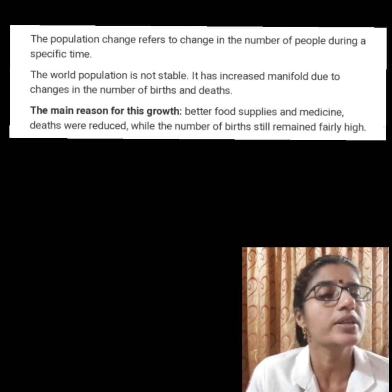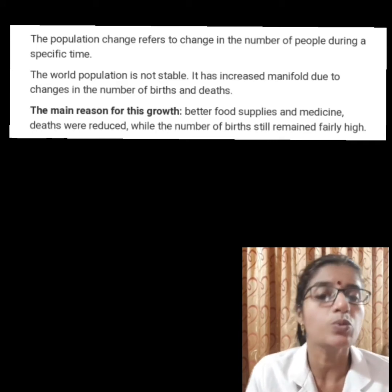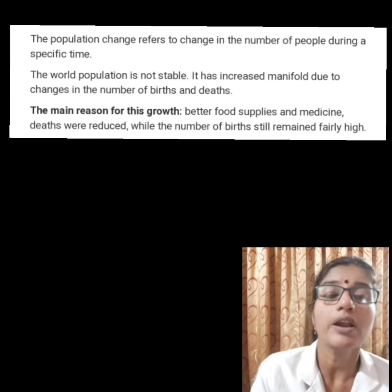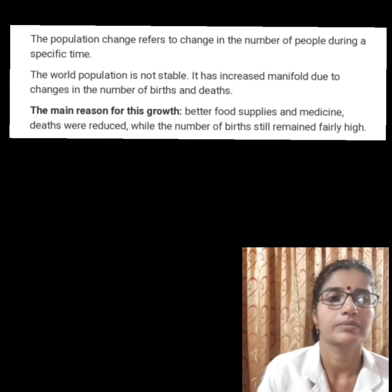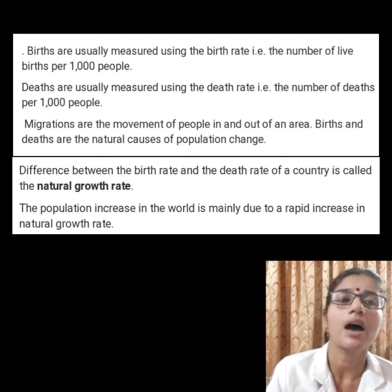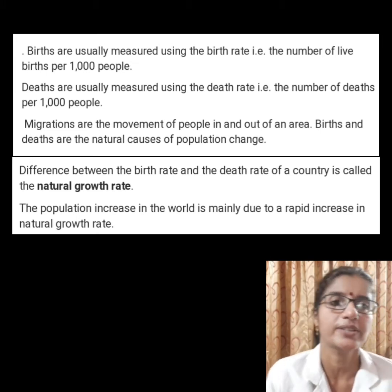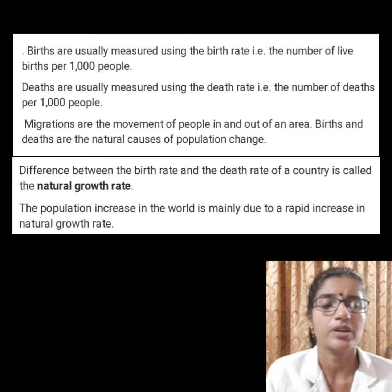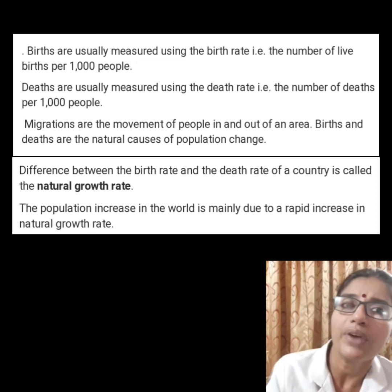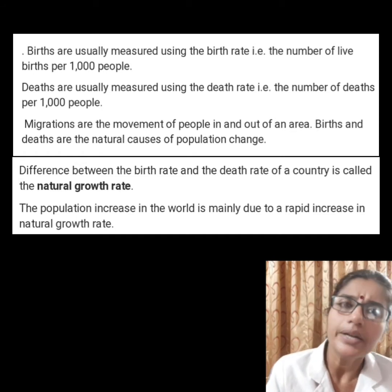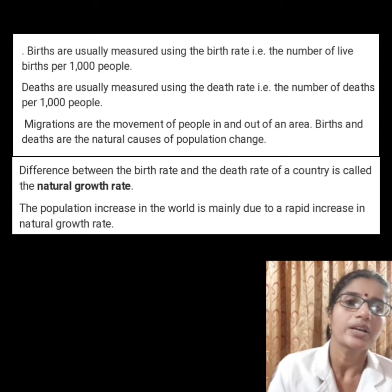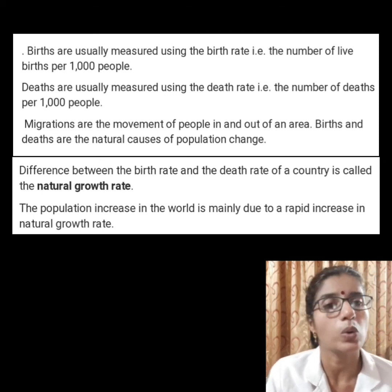The main reason for this growth was that with better food supplies and medicine, deaths were reducing while the number of births still remained fairly high. Births and deaths are the natural causes of population change. Births are usually measured using the birth rate, that is the number of live births per thousand people.